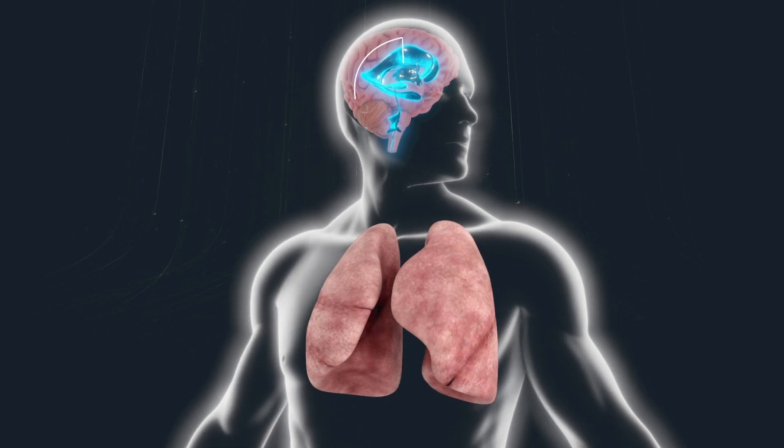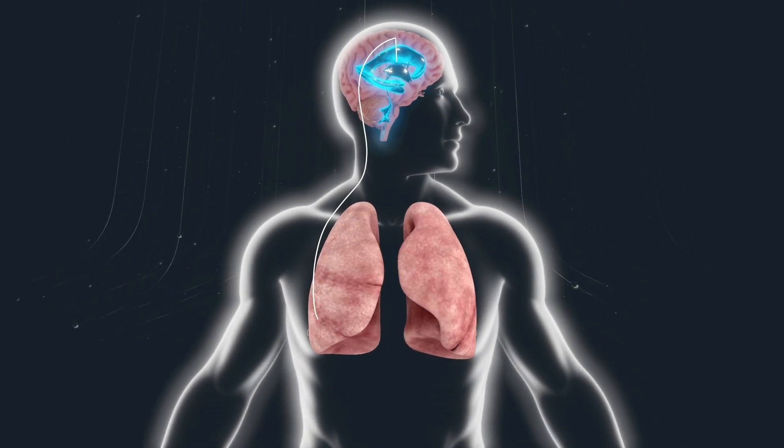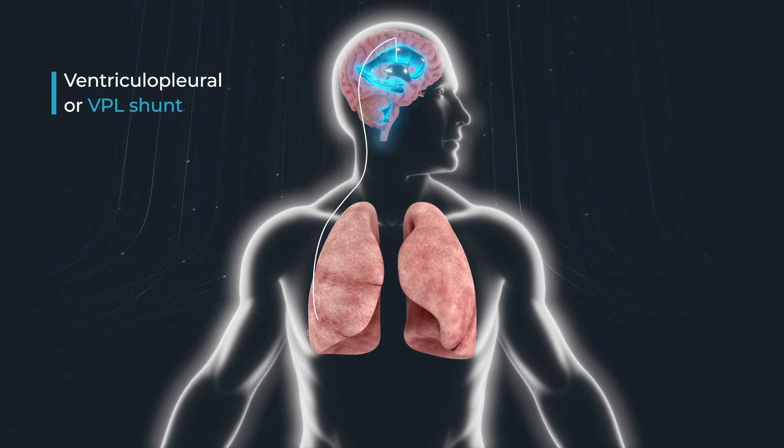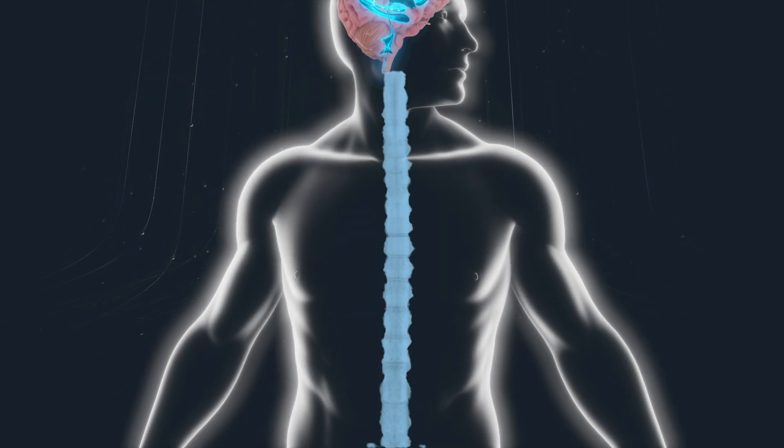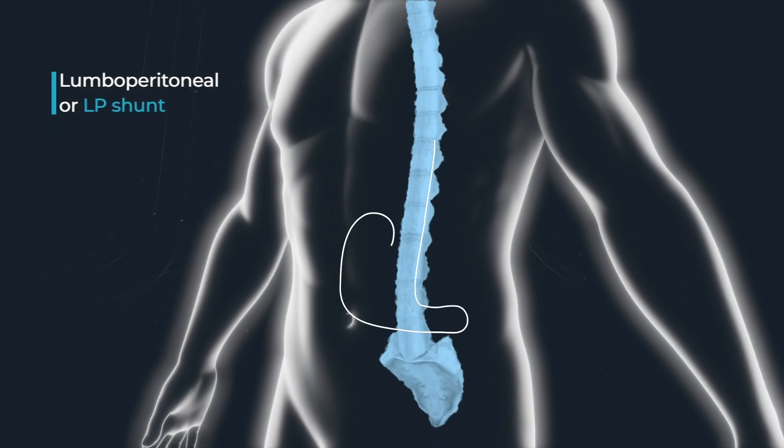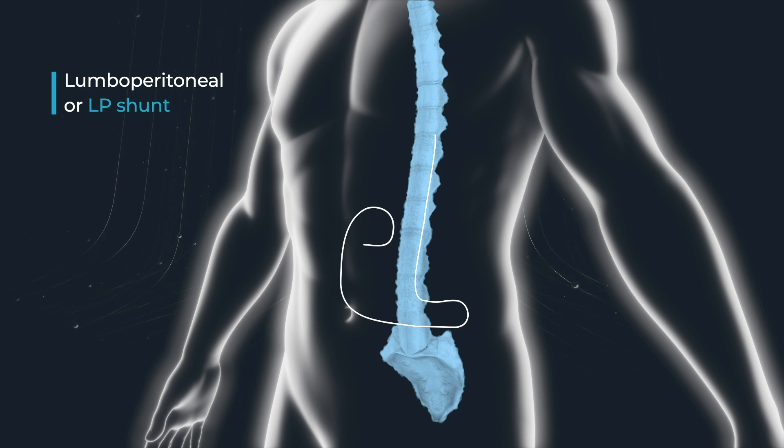The third is in a space between the chest wall and the lungs called the pleural cavity. This is called a ventriculopleural or VPL shunt. Some patients receive a unique type called a lumboperitoneal or LP shunt, which goes from the intrathecal space of the spinal column to the abdominal cavity.